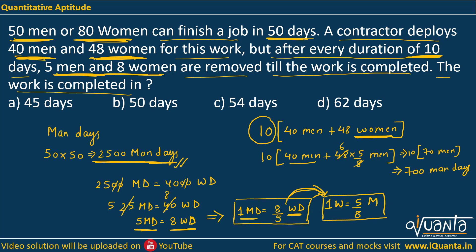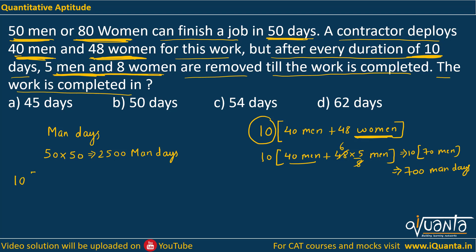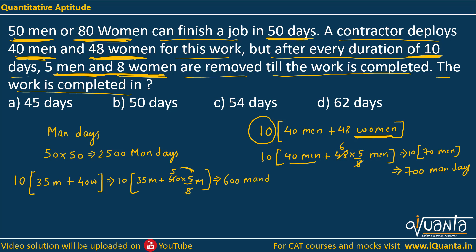Similarly, we calculate the work for the next 10 days. After removing 5 men and 8 women, we have 35 men and 40 women. Converting 40 women: 40 × 5/8 = 25 men. So 35 plus 25 equals 60 men. In the next 10 days, we get 60 × 10 = 600 men days of work.